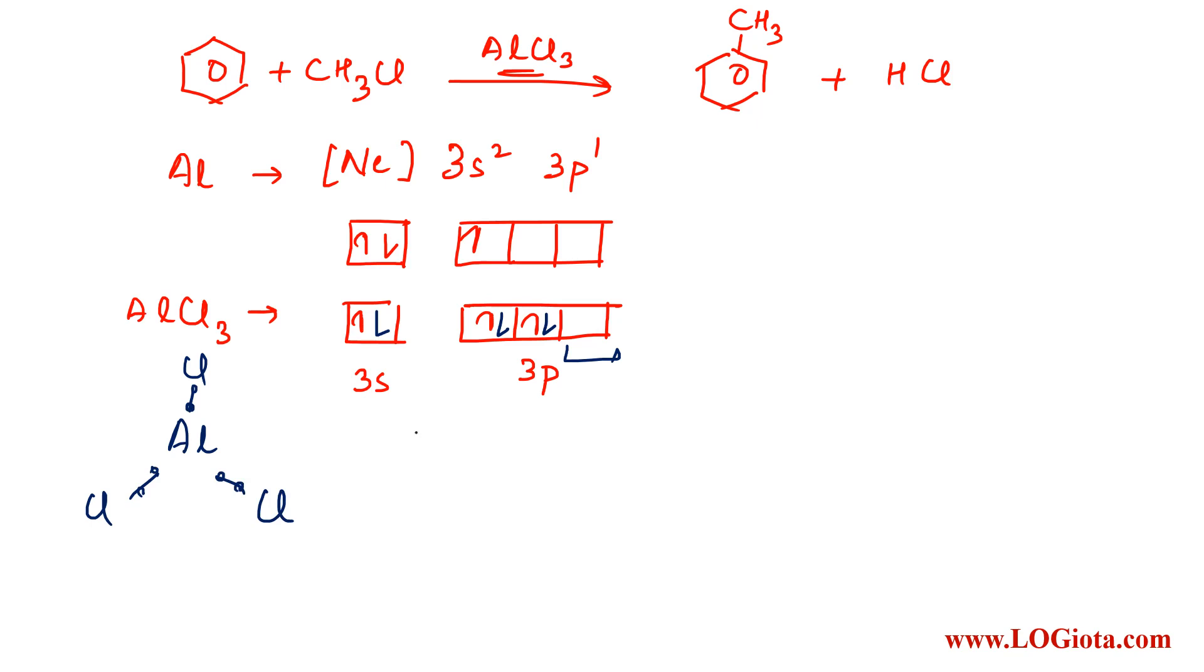We can see there is one p orbital which is vacant. Second, the octet is not complete for aluminum—there are six electrons around aluminum. So it has an incomplete octet.